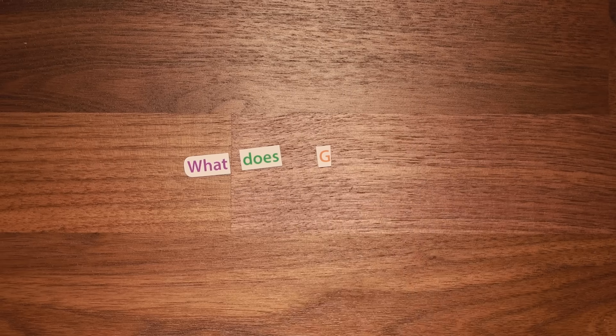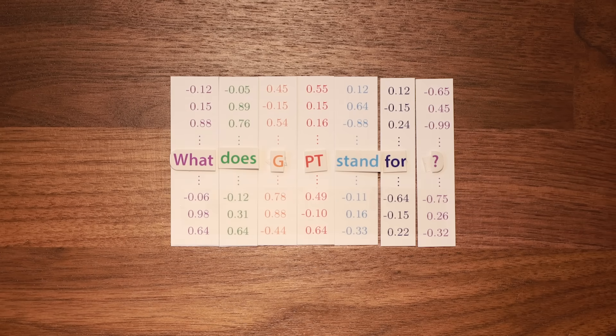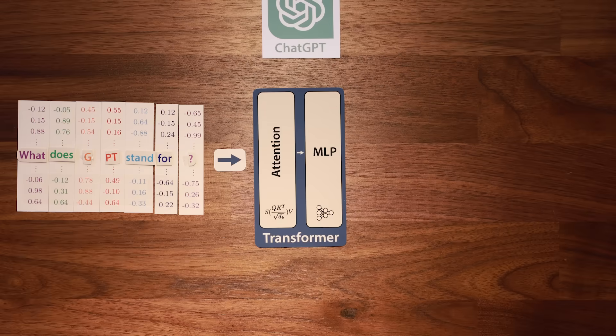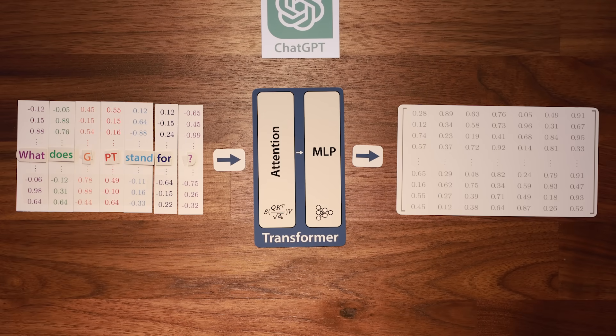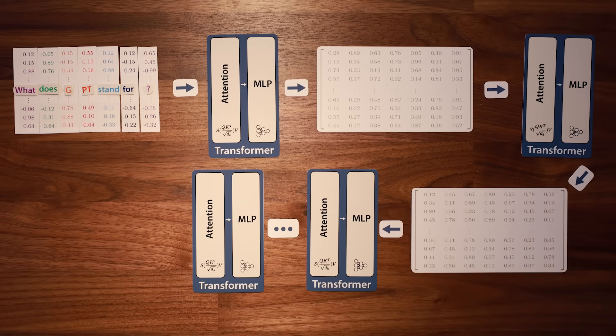To figure out what it's going to say next, ChatGPT breaks apart what you ask it into words and word fragments, maps each of these to a vector, and stacks all of these vectors together into a matrix. This matrix is then passed into the first transformer block, which returns a new matrix of the same size. This operation is then repeated again and again, 96 times in ChatGPT 3.5 and reportedly 120 times in ChatGPT 4.